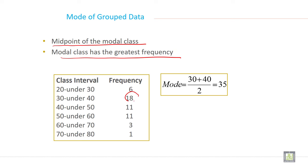So here, the highest frequency is 18. So in front of 18, whatever class you have, just calculate the midpoint of that class. So in front of 18, you have second class. This is second class. So calculate the average of second class. So it is 30 plus 40 divided by 2. So 35 is your mode in case of this type of data.